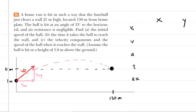Our first step is to draw a picture based on the given information. We have the ball initially located one meter off of the ground surface, and then it is hit with an initial speed of V-naught. The ball travels 130 meters to the right, and it reaches a final position whose vertical height above the ground surface is 21 meters.